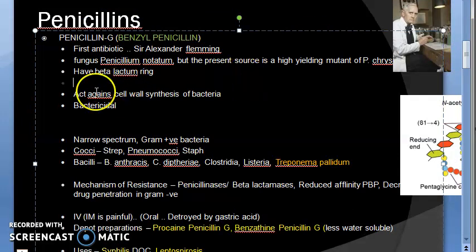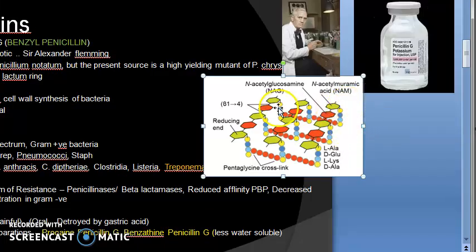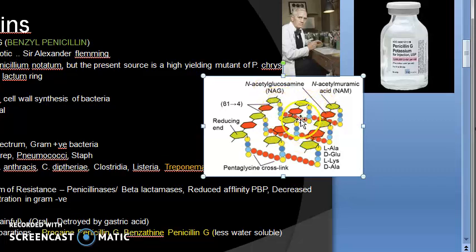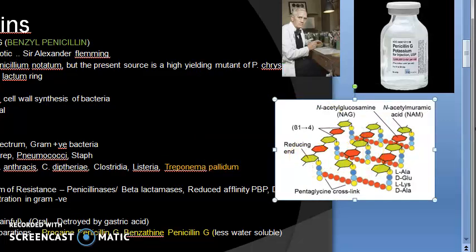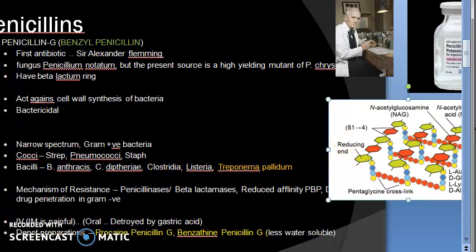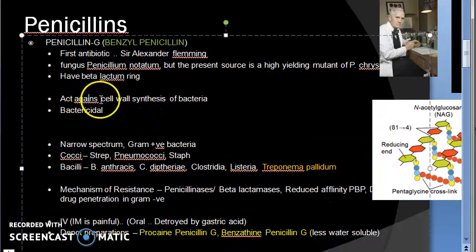All penicillins have a beta-lactam ring. They act against the cell wall by inhibiting cell wall synthesis. NAG and NAM are present and interlinked — NAMs (N-acetyl muramic acids) are interlinked with pentaglycine crosslinks. Penicillin breaks these crosslinks, preventing formation of a strong cell wall structure, which causes the bacteria to die. So penicillin is bactericidal.